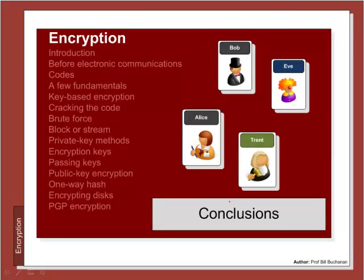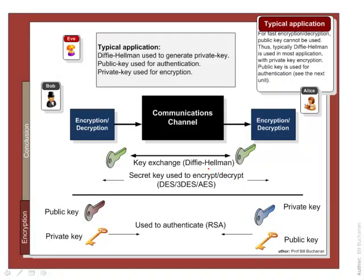In conclusion, key interchange happens with Diffie-Hellman, used to generate a secret key. We typically use private key encryption methods such as DES, 3DES, and AES, which are fairly fast. Public key encryption is typically used to authenticate the sender and the recipient.